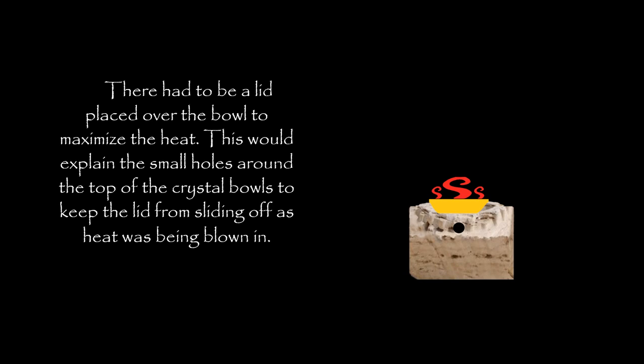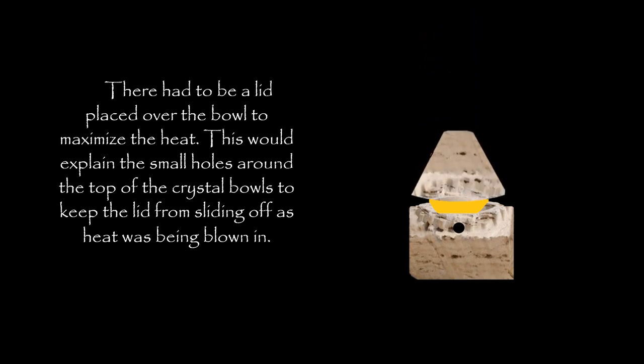There had to be a lid placed over the bowl to maximize the heat. This would explain the small holes around the top of the alabaster bowls — to keep the lid from sliding off as heat was being blown in.